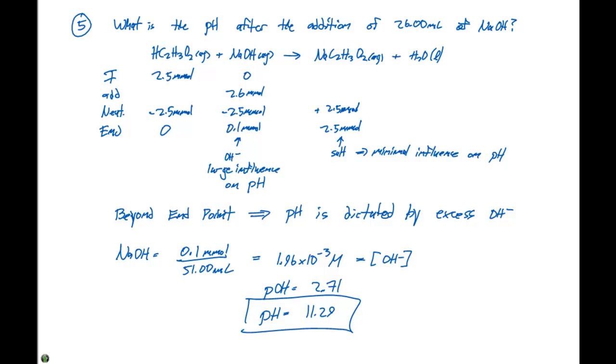When we're looking at these particular cases, once we go past the end point, we have to figure out how much hydroxide ion is in excess. Once we determine that, we divide by the total volume. That gives us the concentration of OH minus ions. We can take the negative log to get the pOH and then do 14 minus the pOH to get the pH, which is 11.29 in this case.